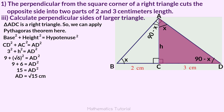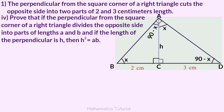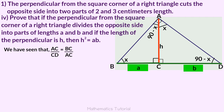AD equals root 15 cm. Fourth question: prove that if the perpendicular from the square corner of a right triangle divides the opposite side into parts of length a and b, and if the length of the perpendicular is h, then h squared equals ab. In the right triangle, H divided by b equals a divided by H. Cross multiplying gives H times H equals a times b. Therefore H squared equals ab.